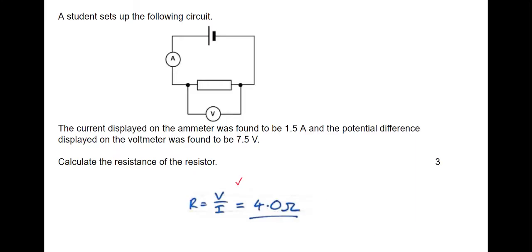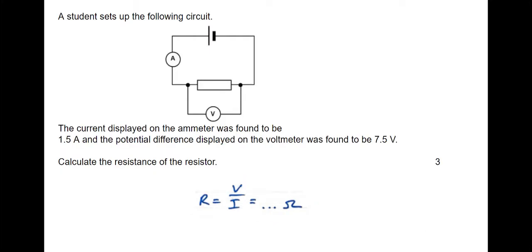Here we've written down the right formula, but got the wrong answer. So we get the mark for the formula. One mark. Here we've written down the formula, but then we've not written down an answer. Formula only. One mark.